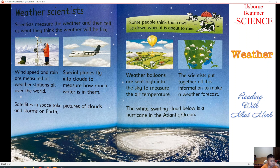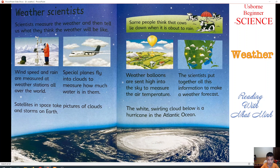Next part, we will learn about weather scientists. Scientists measure the weather and then tell us what they think the weather will be like. Wind speed and rain are measured at weather stations all over the world. Special planes fly into clouds to measure how much water is in them. Satellites in space take pictures of clouds and storms on Earth. Some people think that cows lie down when it is about to rain. Weather balloons are sent high into the sky to measure the air temperature.